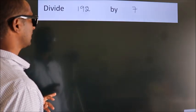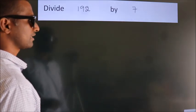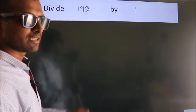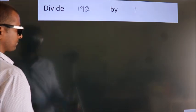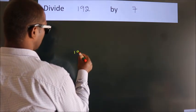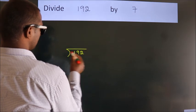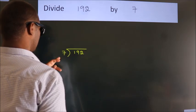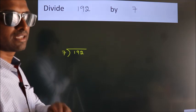Divide 192 by 7. To do this division we should frame it in this way: 192 here, 7 here. This is your step 1.